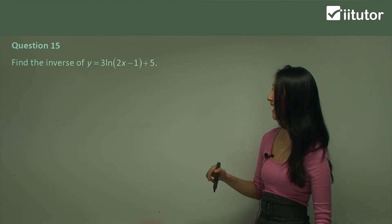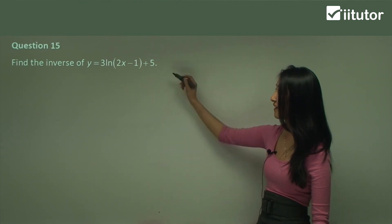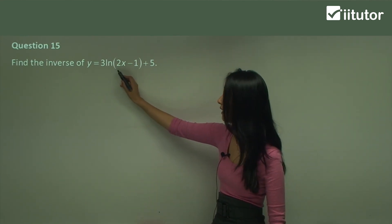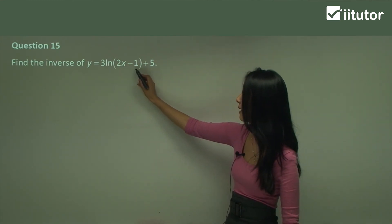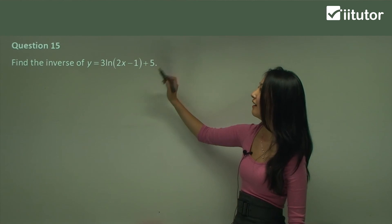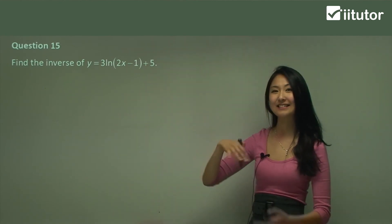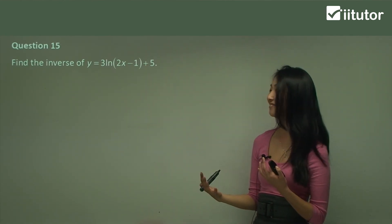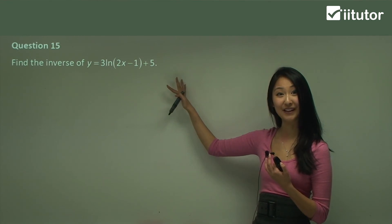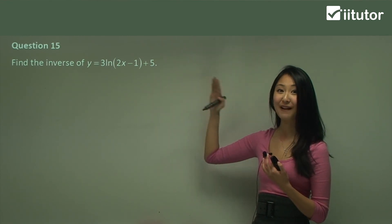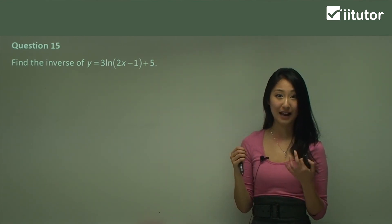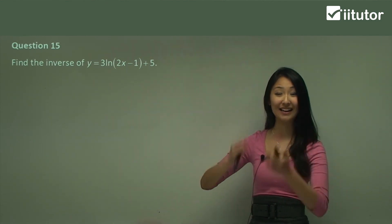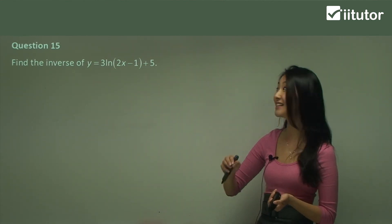Question 15: we want to find the inverse of y equals 3 ln(2x minus 1) plus 5. This is going to be a little more complicated, but let's go through the basics of what I said before — always work from the outside in.